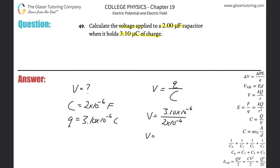So 3.1 times 10 to the minus 6, all divided by 2 times 10 to the minus 6, equals 1.55 volts.